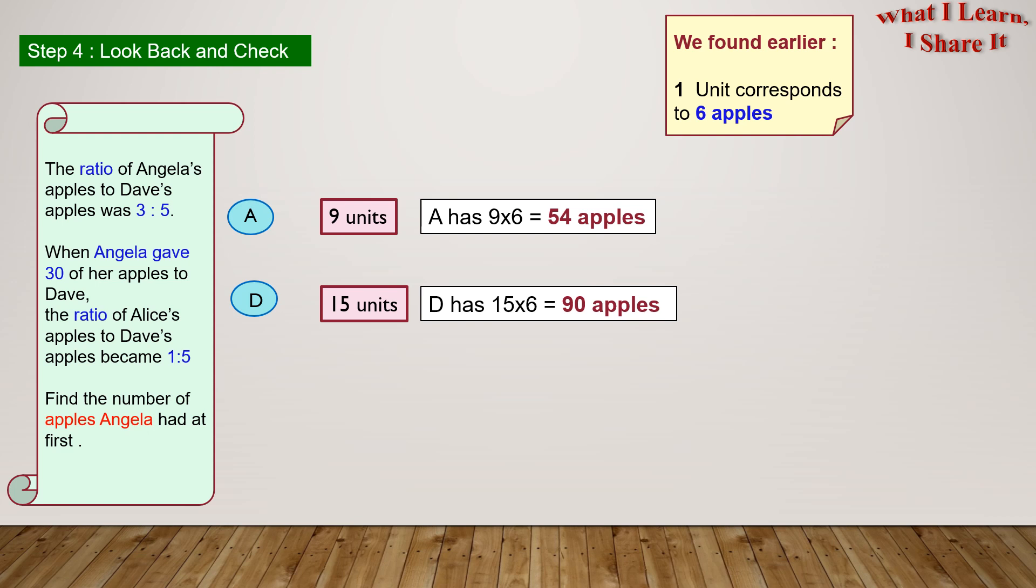Now Angela gave 30 apples to Dave! So now A has 54 minus 30 equals 24 apples, and D has 90 plus 30 equals 120 apples.